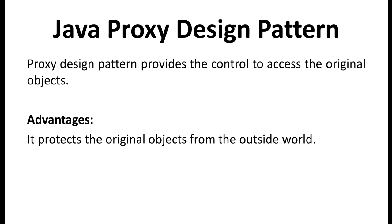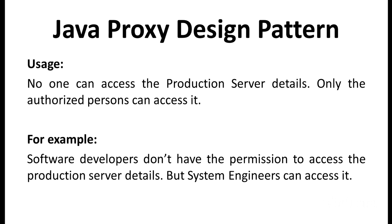The main usage example is: no one can access the production server details — only authorized persons can access it. For example, software developers don't have permission to access the production server details, but system engineers can access it.